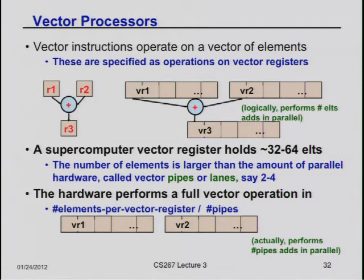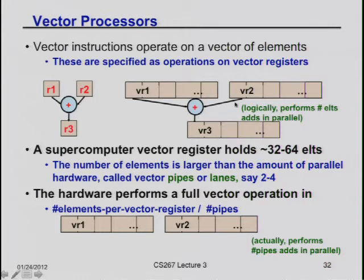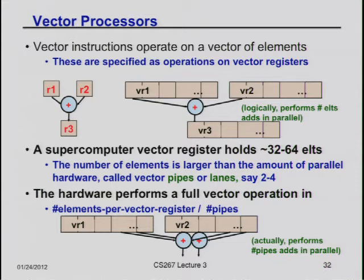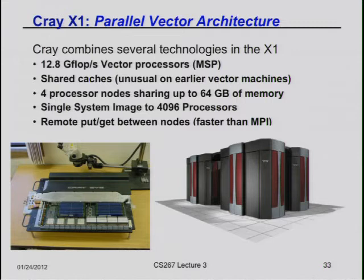A vector processor has a vector register of 32 or 64 words, and a single instruction adds two such registers component by component in a pipeline fashion. If it doesn't have 32 adders it might only have two, so it walks across and does all those additions using whatever hardware is available. This died out for a while but now it's coming back — people are building very large machines this way.